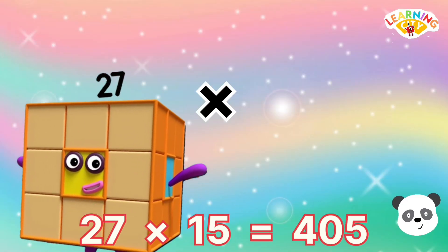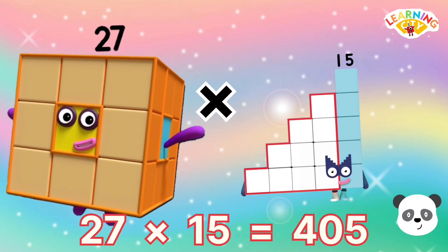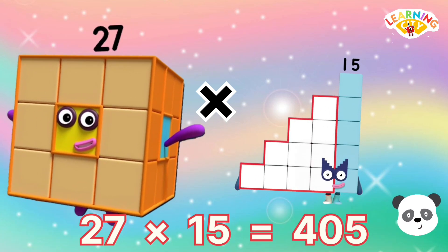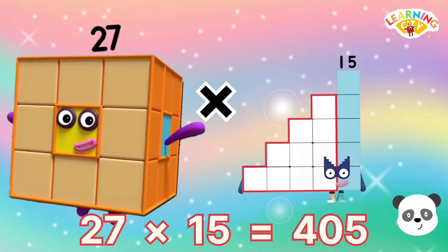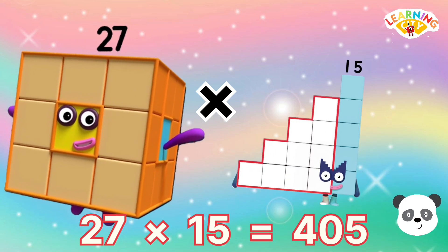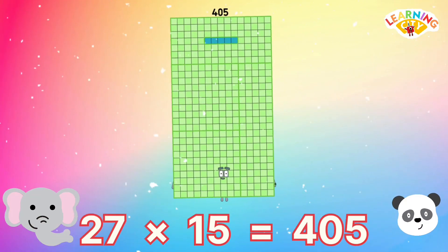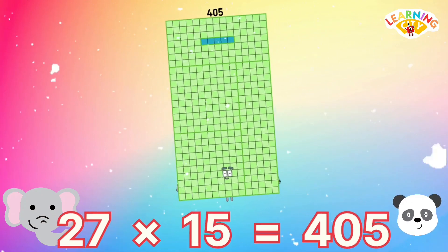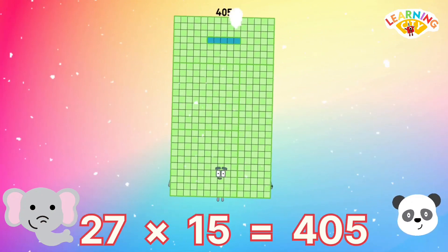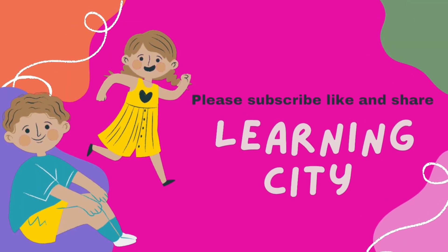27 multiply 15 equals 405. If you like, please subscribe to Learning City. Bye!